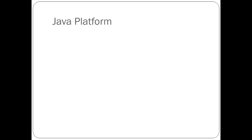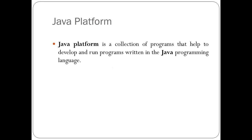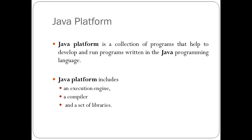Now let's see the three important Java platforms and what a Java platform is. A Java platform is a collection of programs that help to develop and run programs written in the Java programming language — just as a railway platform is one on which trains run and provide services. Every Java platform includes an execution engine, a compiler, and a set of libraries.